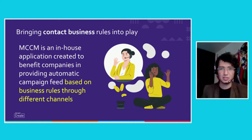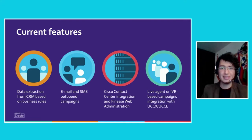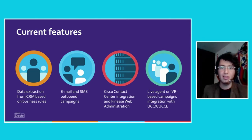The current features of this ongoing project include extracting CRM business rules and translating them into mechanisms for contacting people through different channels — SMS, email, and queues in our UCCX and UCCE platforms such as robocall and live calling. This application can also be integrated into the Finesse console so agents and supervisors can monitor the contact events.